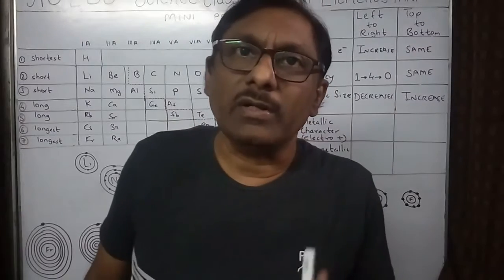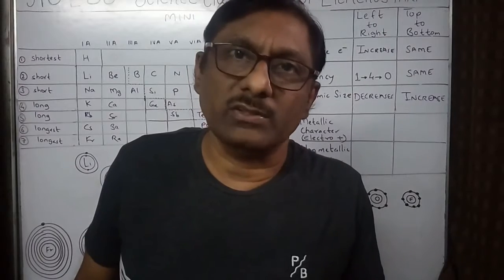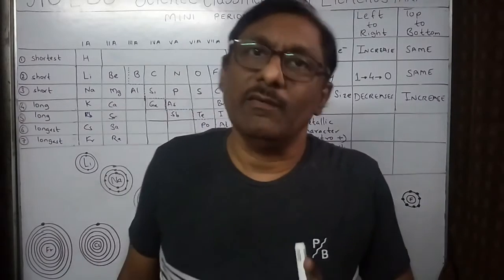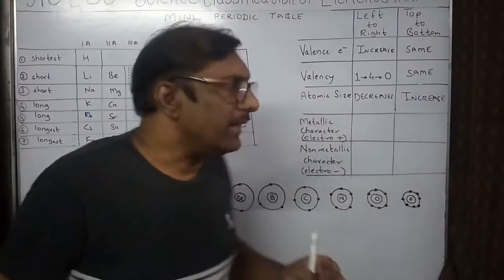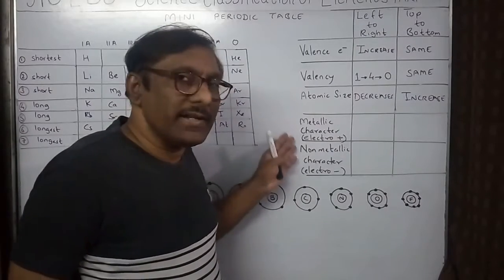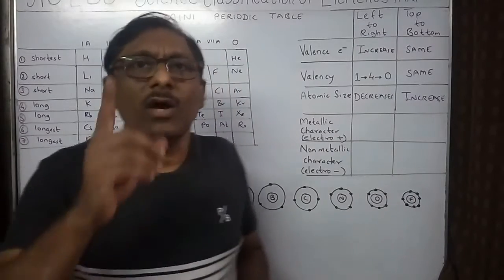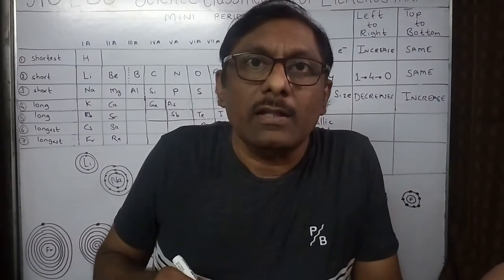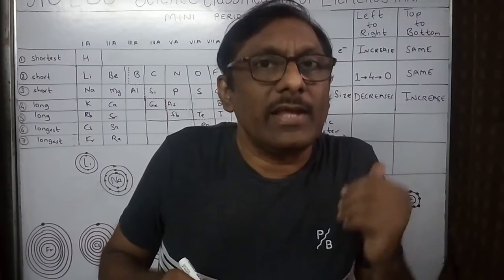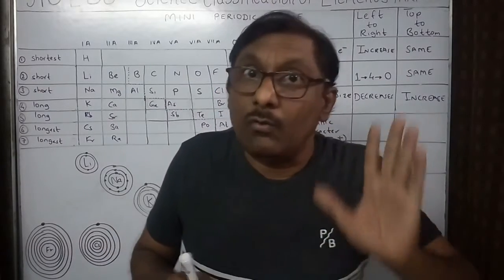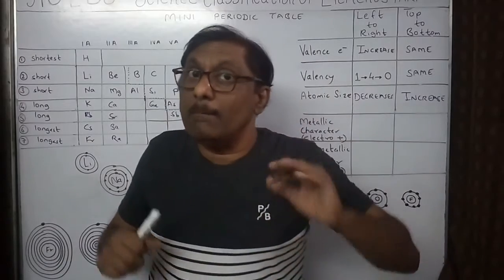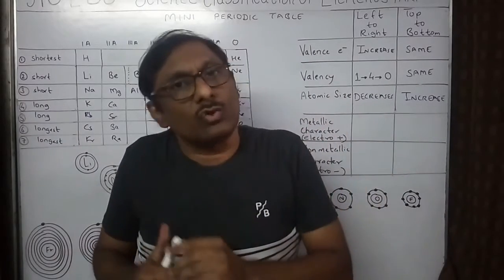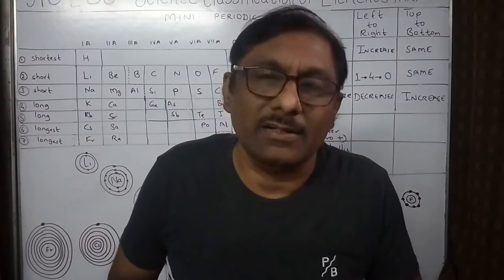Now, what is electropositivity? Electropositivity is metallic character — it depends on how easily the elements give their electrons. The easier an element gives its electrons, the higher its electropositivity. It is essentially the metallic character of an element.